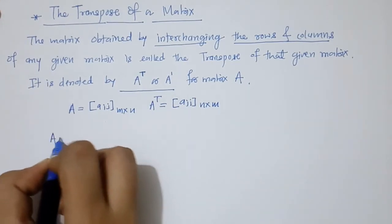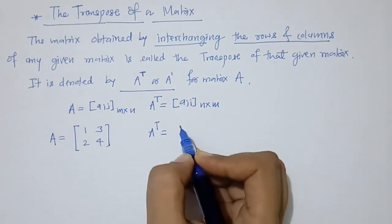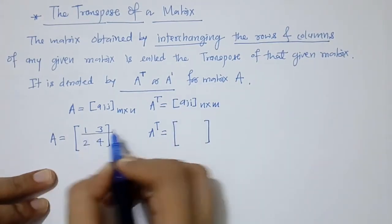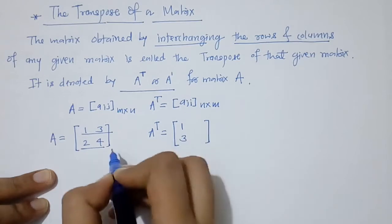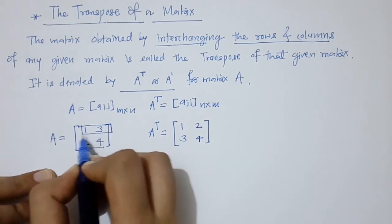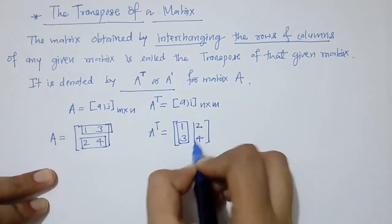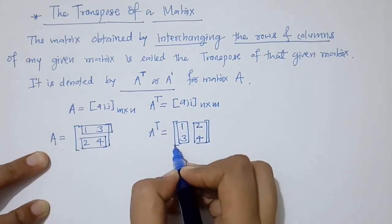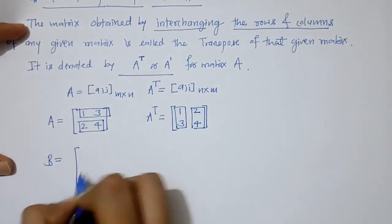Let's take an example. If we have matrix A and we want its transpose, we have to interchange the rows and columns. The first row is written as the first column, and the second row is written as the second column. So matrix A transpose is obtained by interchanging rows and columns.